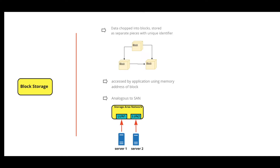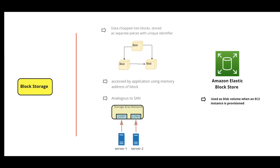Servers get access to dedicated SAN logical units — also called LUNs — which are virtual hard disks. These are not shared among servers, unlike in EFS. EBS is the Amazon service for block storage in the cloud and is used as a disk volume when an EC2 instance is provisioned by default. When a user or application requests data, the underlying storage system reassembles the data blocks and presents the data.